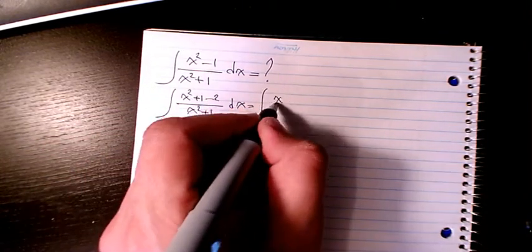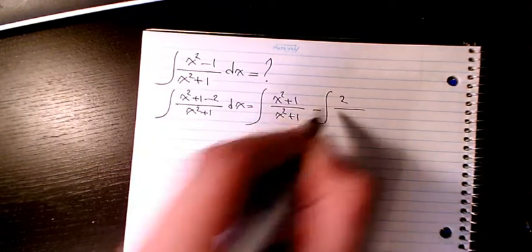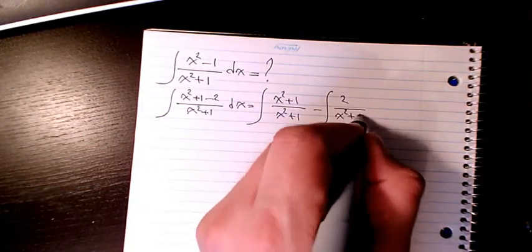I will write x square plus 1 divided by x square plus 1 minus the integration of 2 over x square plus 1 dx.